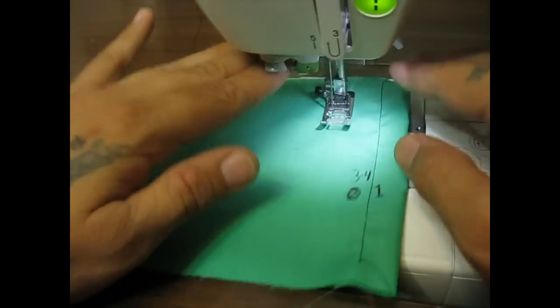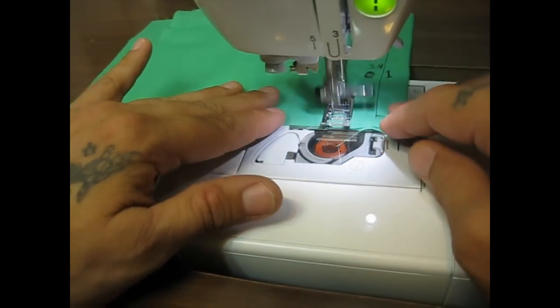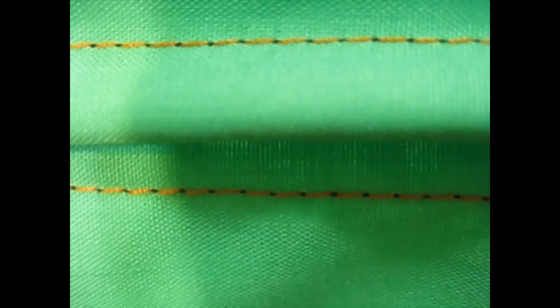Tension is important because you want to bring the thread so that the two threads, your top thread and your bobbin thread, meet in the middle of your fabric and form a nice strong pretty stitch. Good looking stitch, and you can see right there between 1 and 3 there's not a whole lot of difference that you can tell.